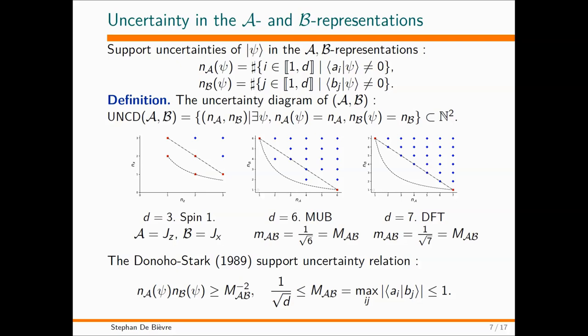It says that the product of these two things is bigger than one over M_AB squared, where M_AB is the maximum matrix element of the matrix U. This information is drawn here as this hyperbola. You can see that here in this example, this is not such a bad bound because it is reached twice. Here it's not so bad because it's almost reached. And here it looks pretty bad, because there is this entire soft belly there where there is nothing. So it looks that it's not a very good estimate. It's a lower bound, but maybe it's not so great.